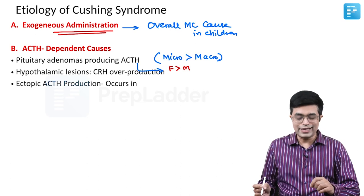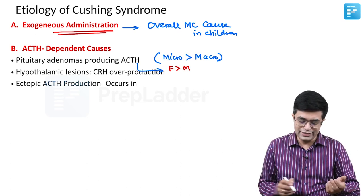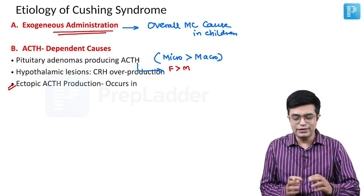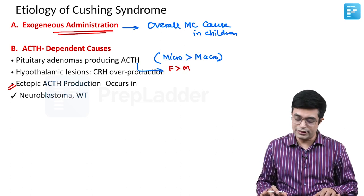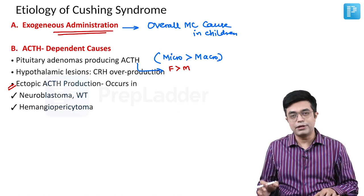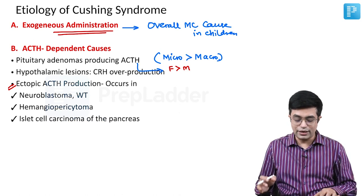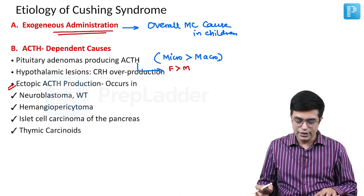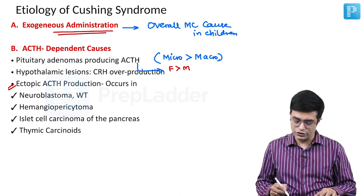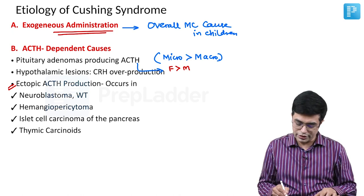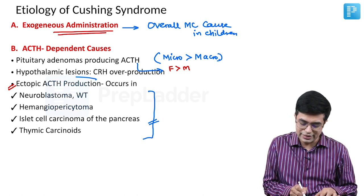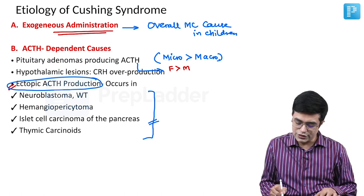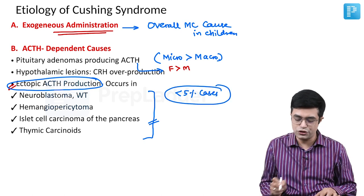The third category is ectopic ACTH production. It is rare overall but can be seen in certain pediatric malignancies: neuroblastoma, Wilms tumor, hemangiopericytoma, islet cell carcinoma of the pancreas, and thymic carcinoids. Ectopic ACTH production is responsible in less than 5% of Cushing syndrome cases in children.